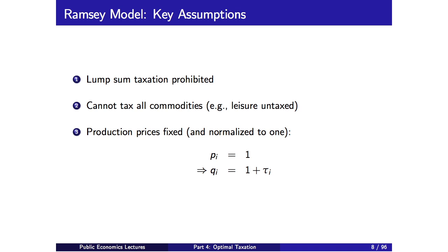There are three critical assumptions in the Ramsey model. First, we prohibit lump sum taxation, because if you allowed it, the answer is trivial — just implement an E-dollar lump sum tax, which creates no distortions. We think that for redistributive reasons not modeled here, we can't use lump sum taxes, so we rule that out by assumption. Second, we cannot tax all commodities — there's at least one we cannot tax. If you can tax everything including leisure, it's equivalent to a lump sum tax since you don't distort relative prices. Typically leisure is untaxed, so you change the relative price of consumption goods and leisure with income taxes or consumption taxes.